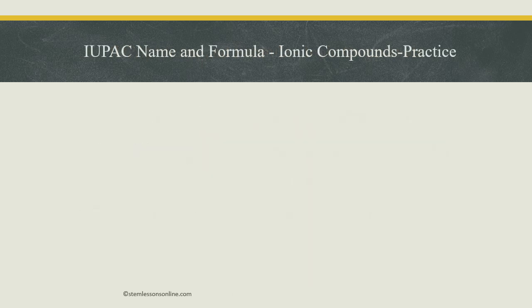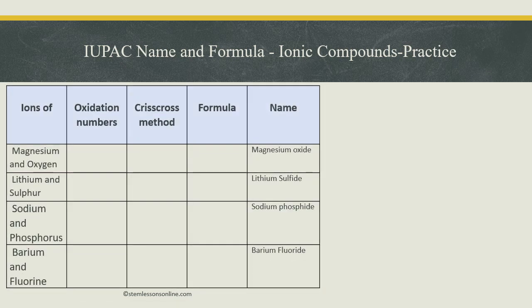Now we will try some examples. In the first compound, the ions are from magnesium metal and oxygen non-metal. Magnesium is in the second group, so we will have an ionic charge of plus 2. And oxygen is from the 16th group, so we will have an ionic charge of negative 2. Since the charges are the same magnitude and opposite in sign, they will cancel each other. So the formula is MgO, and the name will be magnesium oxide.